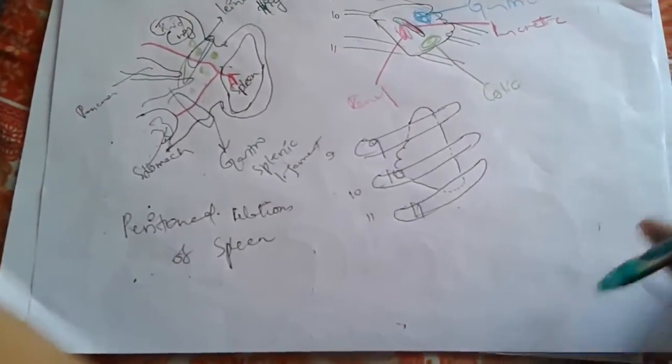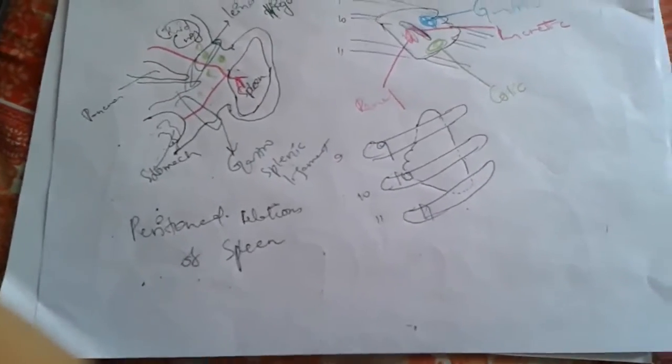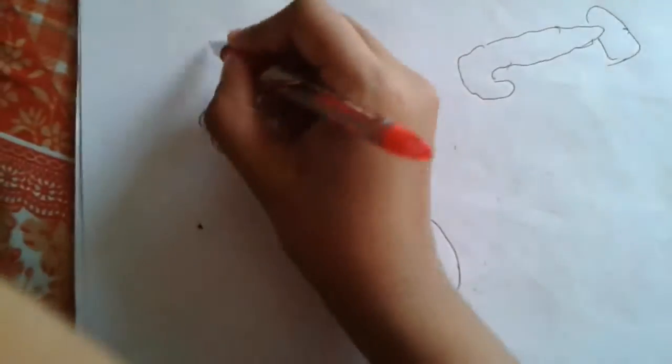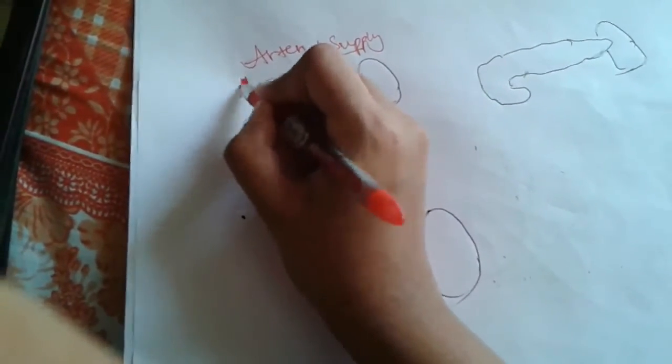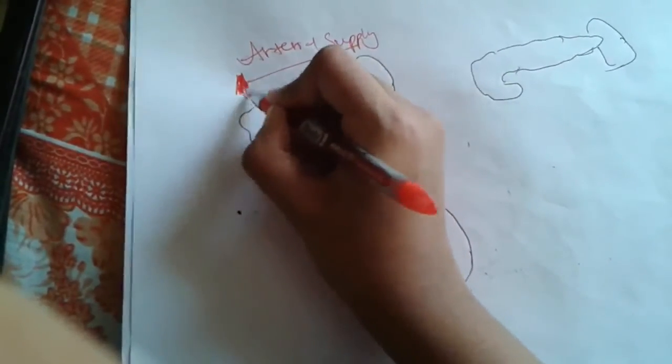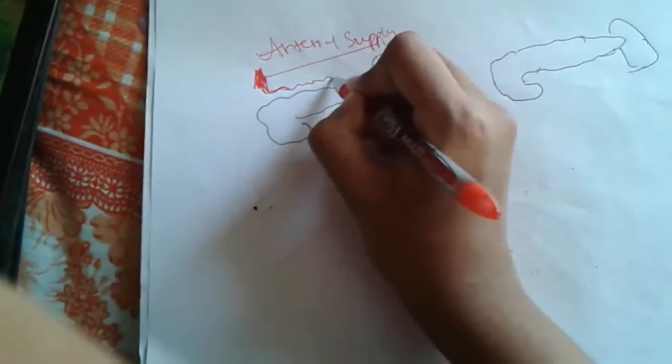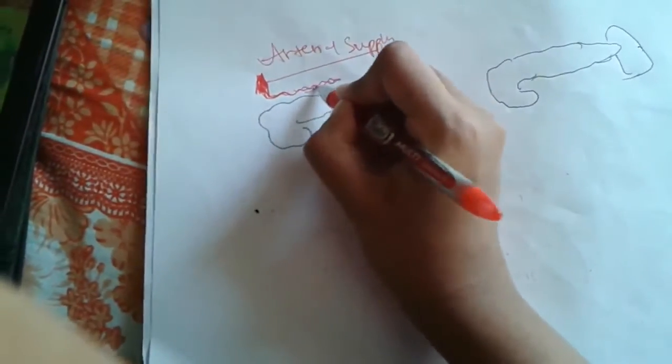Having completed the anatomical features of the spleen, let us now go to the arterial supply. The spleen is supplied by the splenic artery, which is a branch of the celiac trunk.